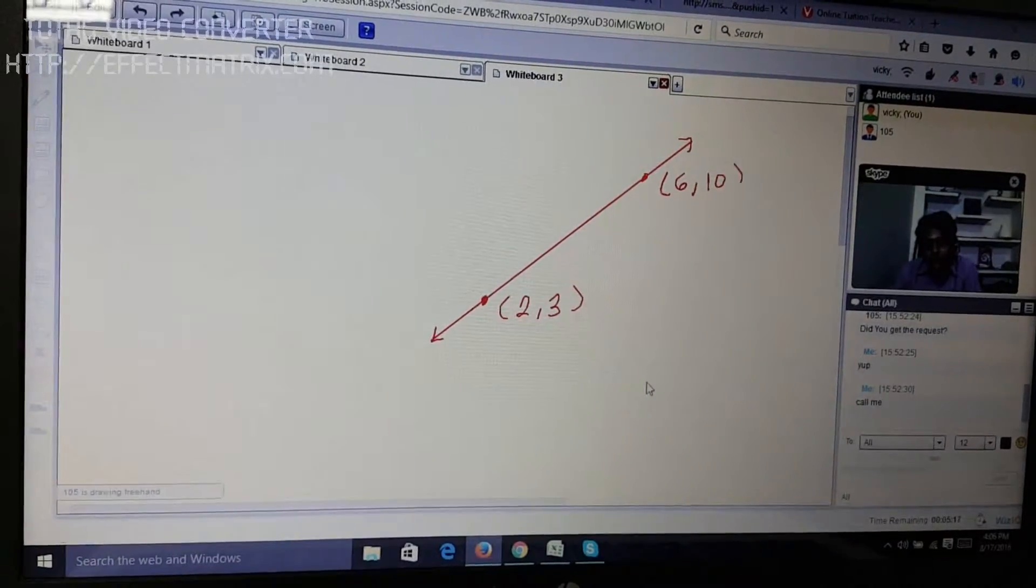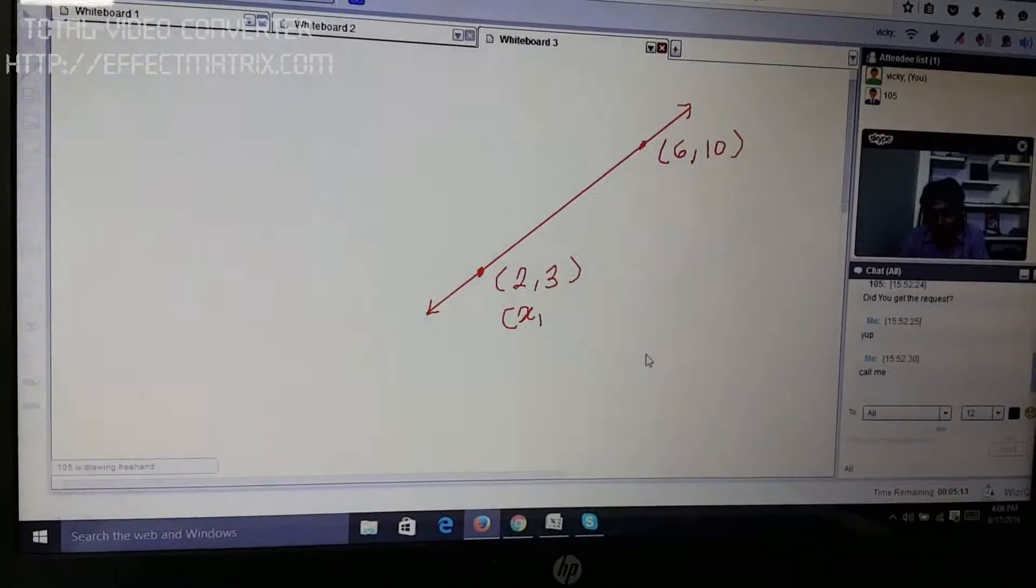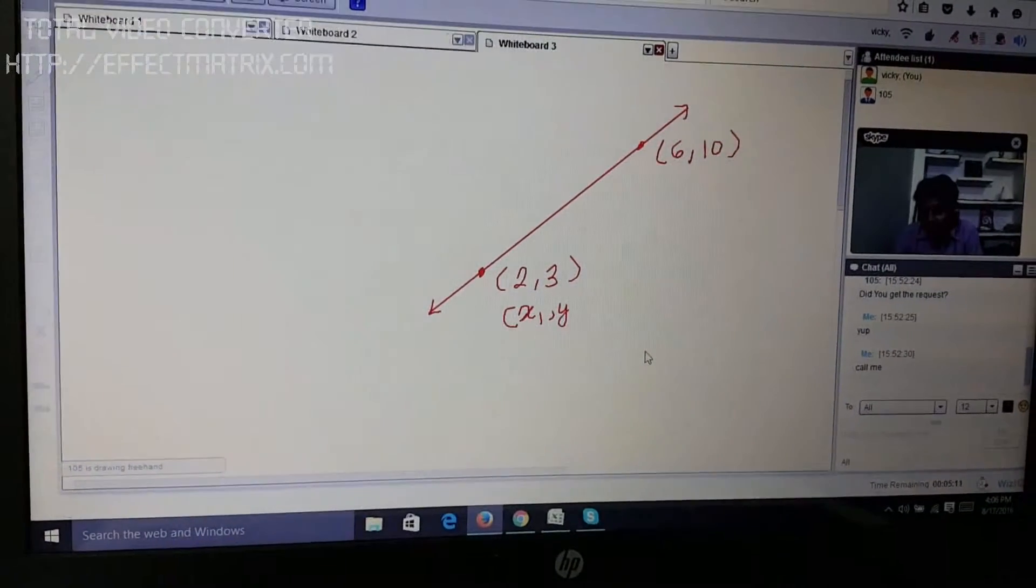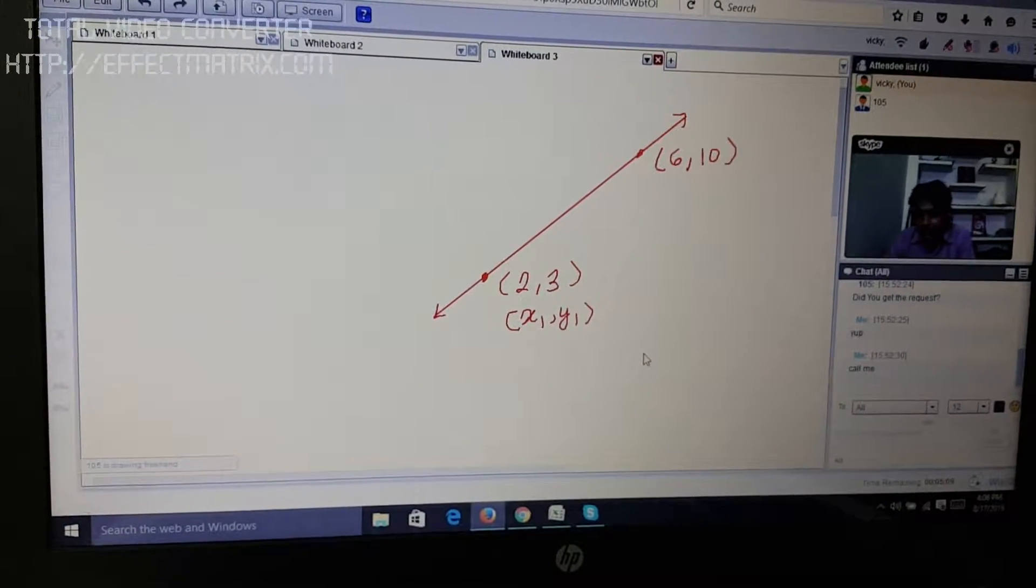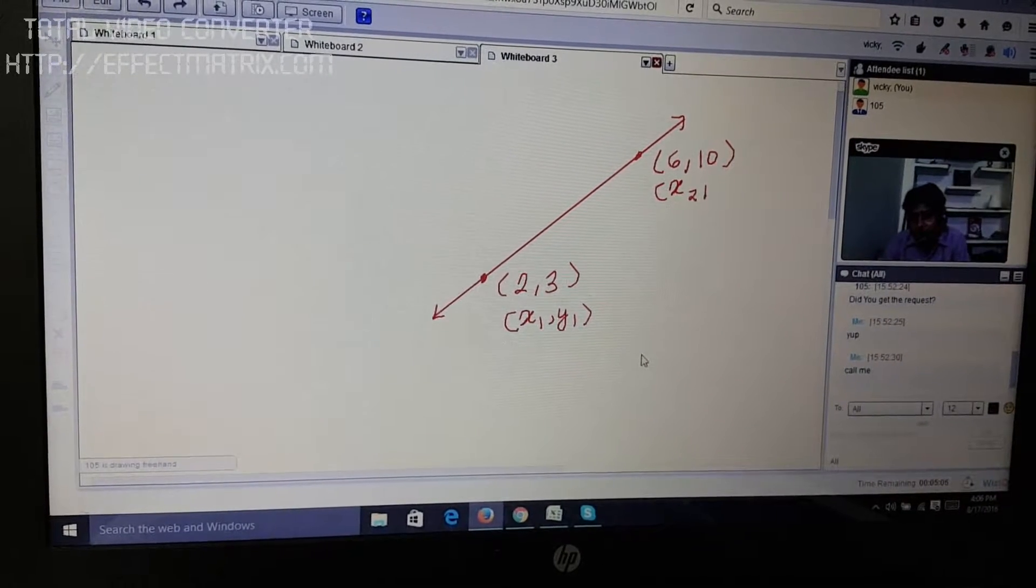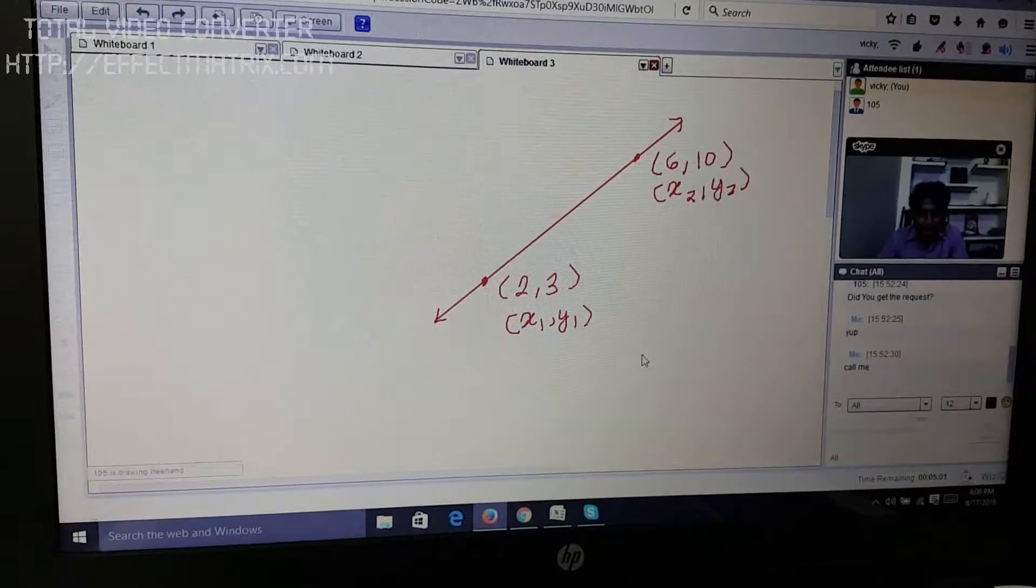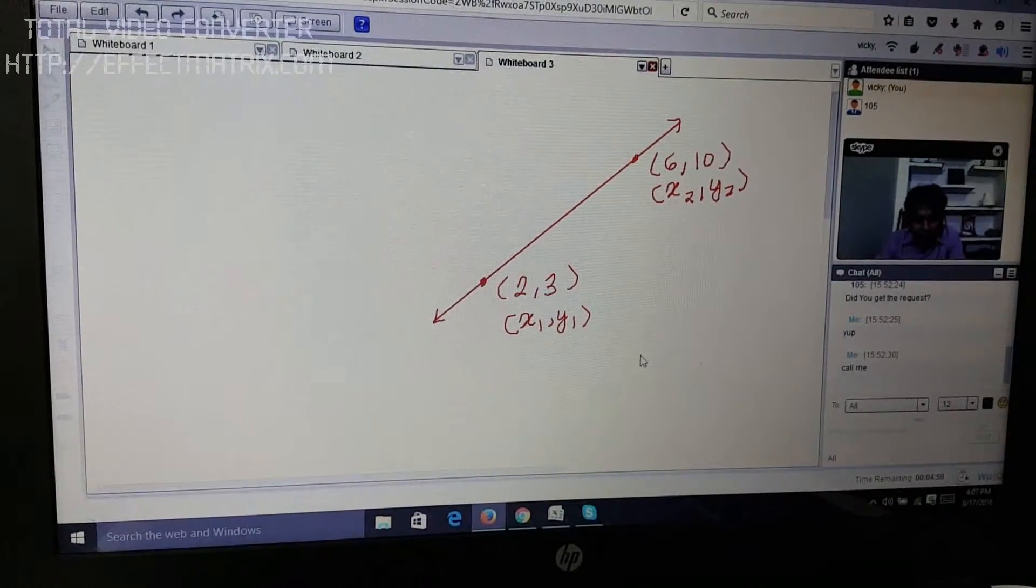So, what do we do? We simply have to consider one of the points to be x1, y1 because there are two points. So, we just use certain subscripts after x and y. Here, we again consider the points in the similar format x2, y2. Right now, we just have to consider the formula that we...